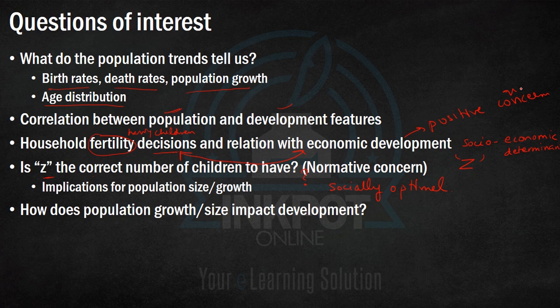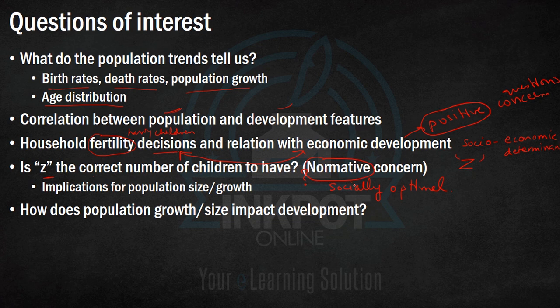We want to answer the question: are household-level fertility decisions optimal at the social level? Note how we are moving from a positive question — understanding what determines fertility decisions — to a normative question. The number of children that people choose to have: is it socially optimal? Is it a good or bad thing for society? What will be the implications of fertility decisions on population growth and size? These are our normative concerns.